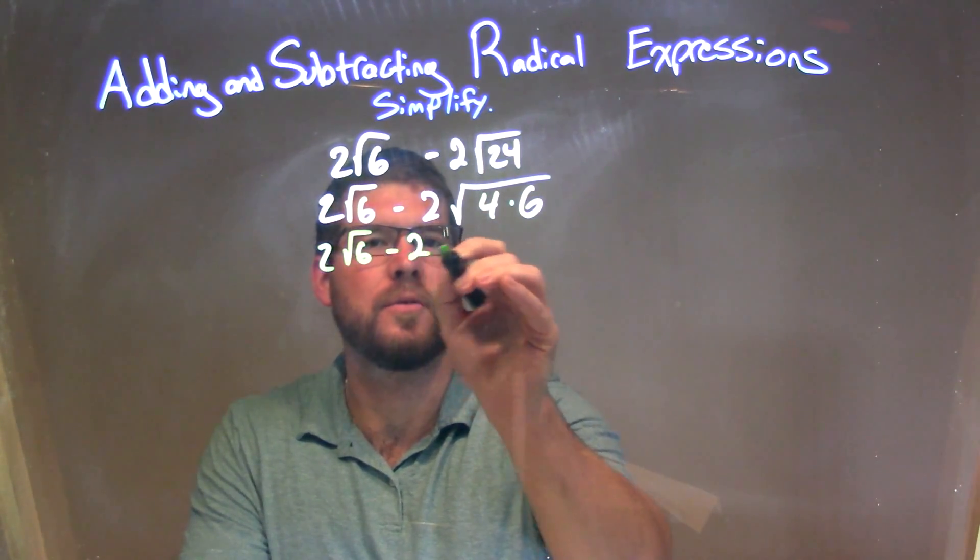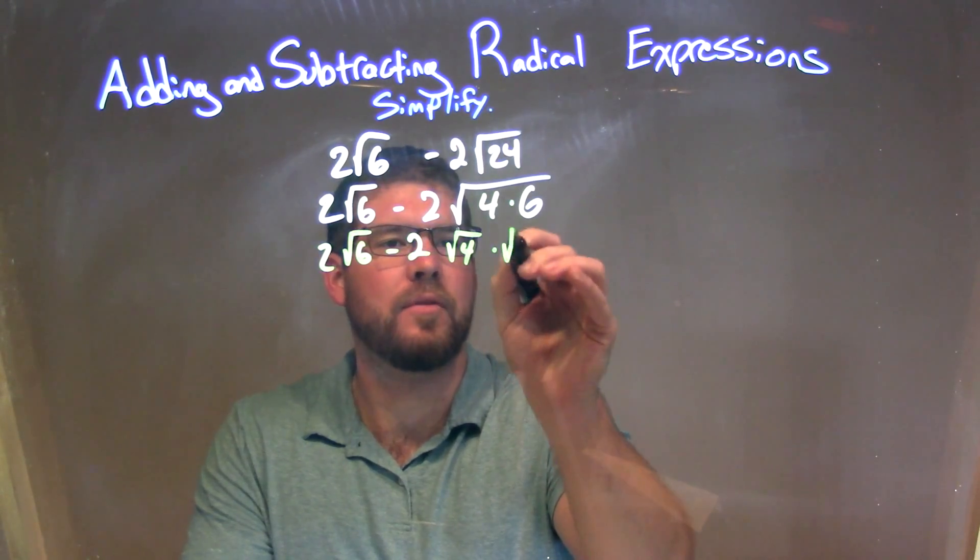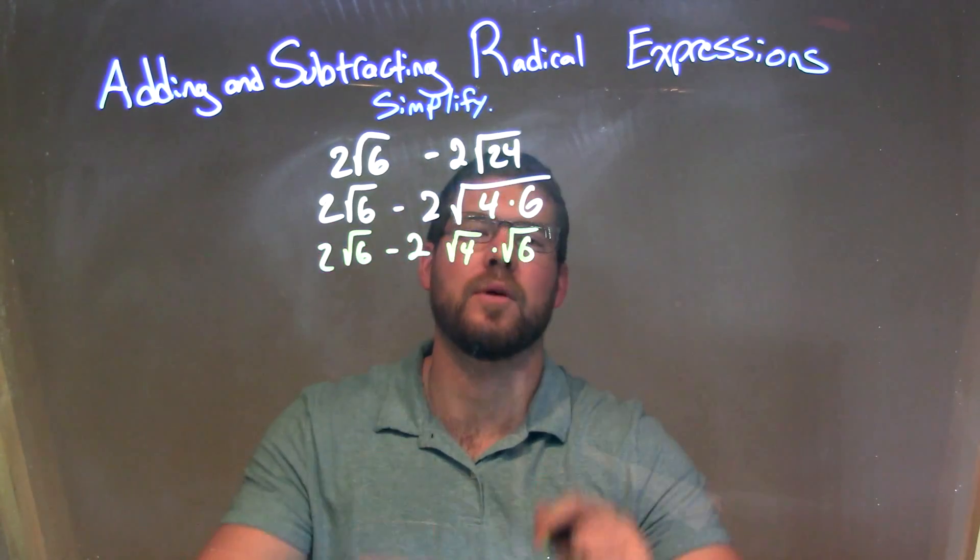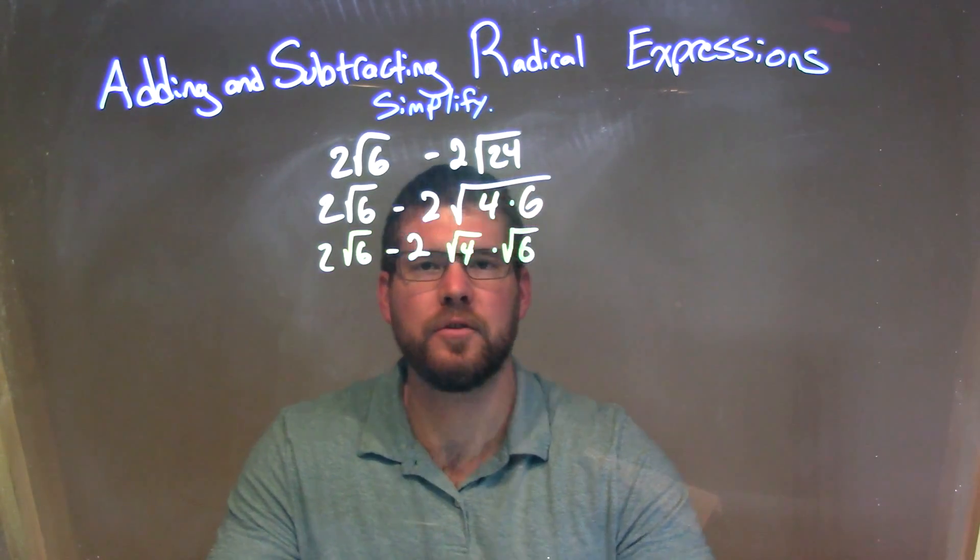2 square root of 6 minus 2 and square root of 4 times the square root of 6. They're multiplied on the inside, they can be multiplied outside the square root or just have separated square roots like that. And what that allows me to do is to simplify this.